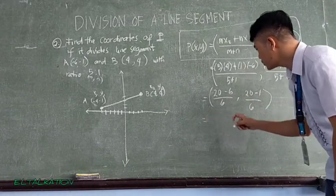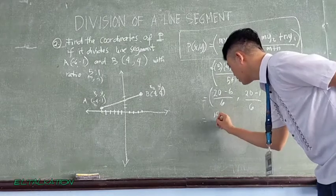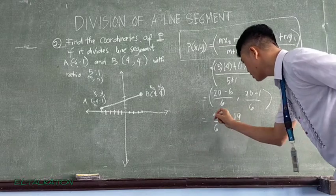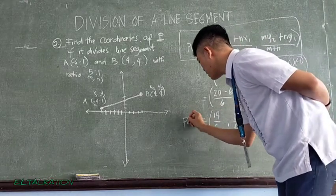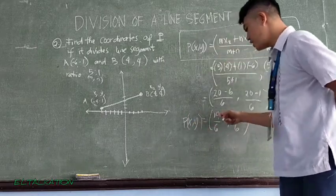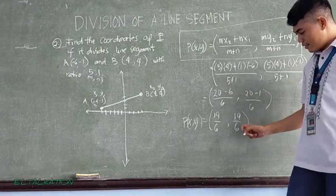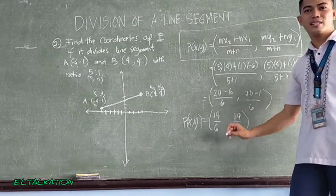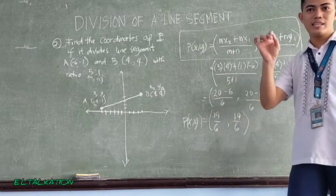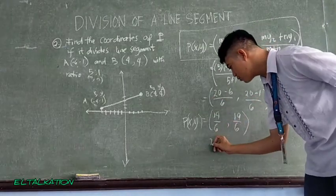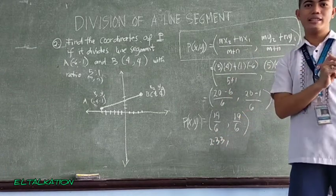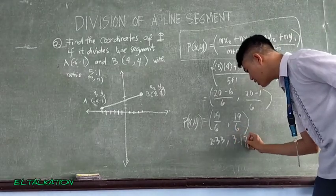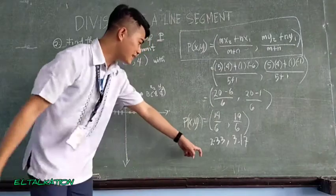Then we will have 20 minus 6 is 14 all over 6, and 20 minus 1 is 19 all over 6. So, meaning to say here, our P coordinate x and y is 14 over 6 or 19 over 6. So approximately 14 divided by 6 is 2.33, while 19 divided by 6 is 3.17. So let's plot this.